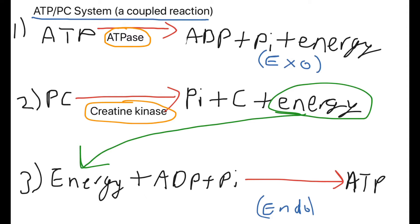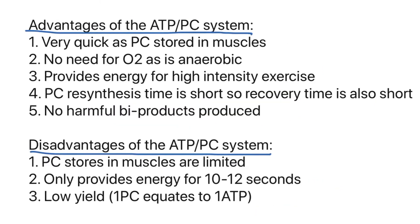The second stage is how we resynthesize ATP. Phosphocreatine, which is stored in the cell, is broken down by the enzyme creatine kinase into a phosphate and creatine, plus more energy. That energy is then used in the next reaction: the energy plus the ADP from the first reaction plus the phosphate from the second reaction is resynthesized in an endothermic reaction to form ATP. You need to explain that process in the exam for around three to six marks.